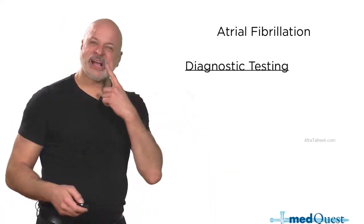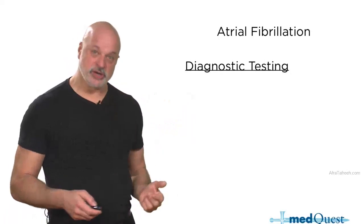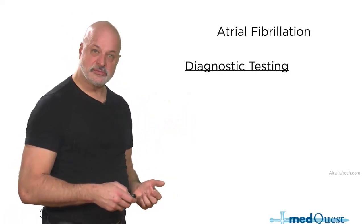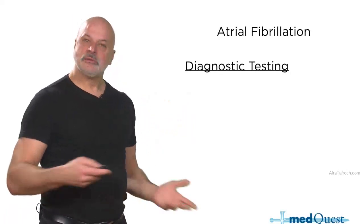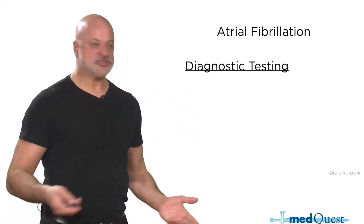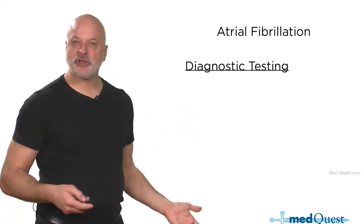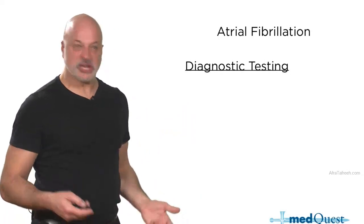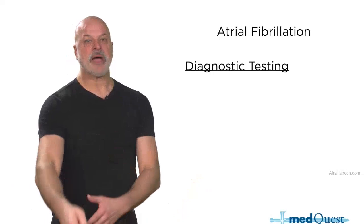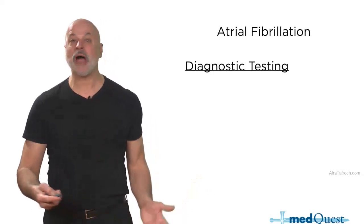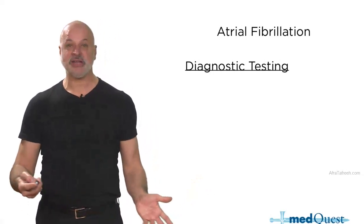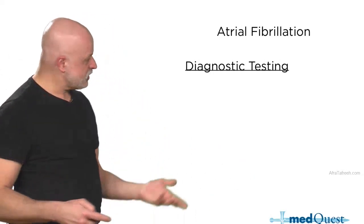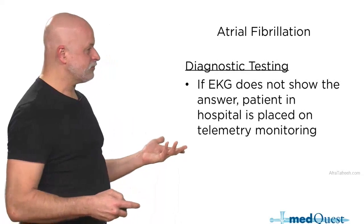What clotting disorder can cause atrial fibrillation? A pulmonary embolus — blocking the flow of blood out of the heart. Pulmonary embolus can cause atrial fibrillation by blocking blood flow out of the heart. It stretches the atrium and you get AFib.